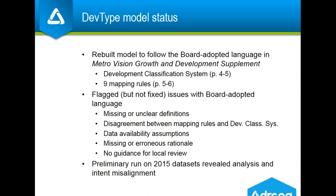There are also a few cases where the mapping rules disagree with the system descriptions — two pieces of board-adopted guidance that actually conflict with each other. There are some assumptions about how data comes in that don't match reality. In general, the model relies on data on parcels, subdivisions, open space, and employment. In some cases we're stretching this data well beyond its original intended purpose, and right now we don't have the flexibility in what's board-adopted to deal with that.